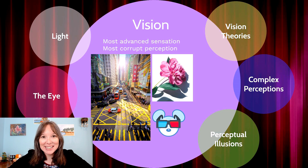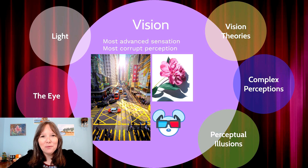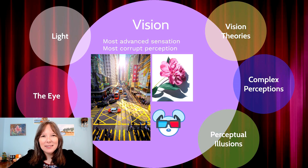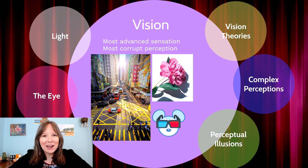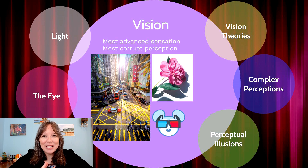Our sense of vision, or our sense of light, is the most advanced sensation. If you think about the depth and the colors and the movement, we can detect amazing things through vision. But it's also the corruption of this sense that leads to many forms of entertainment, such as animation — the idea that by moving pictures fast enough there appears to be false movement, or even 3D animation, where the disparity between our eyes can make an illusion of 3D depth in movies.